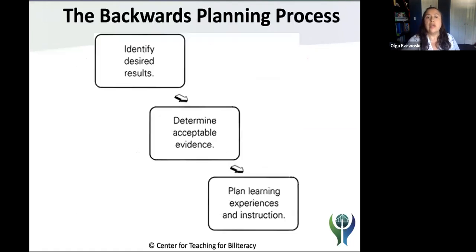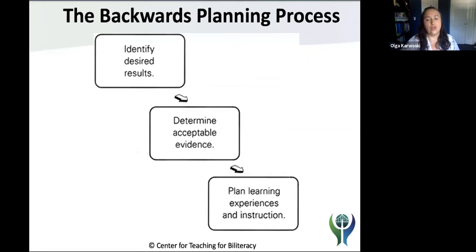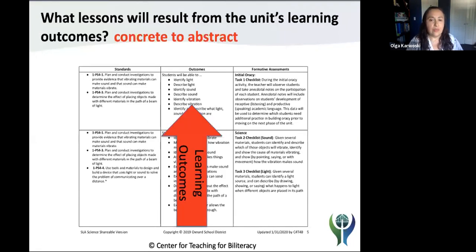We're going to approach this by utilizing the backwards planning model. We always want to identify our desired results, determine the acceptable evidence our students will produce, and then have that collaborative time with our PLC to plan the learning experiences and instruction. When planning mini lessons, think about what lessons will result from the unit's learning outcomes — using the language of going from concrete to abstract, which applies both to synchronous and asynchronous instruction. Consider what kinds of verbs are shown in your outcomes to help plan strategies.